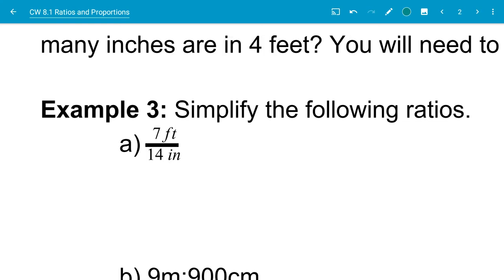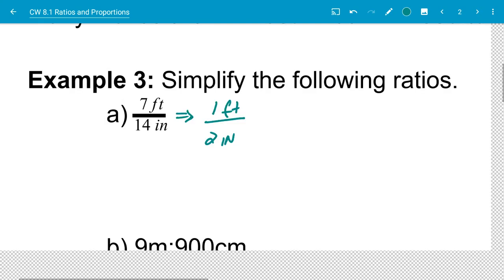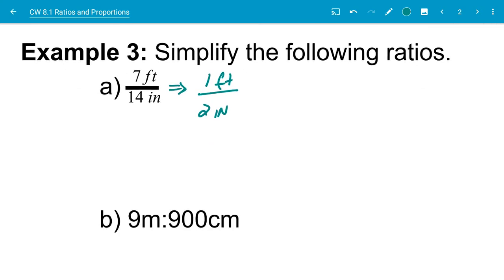The first thing that we want to do is let's go ahead and reduce this first, just the number portion. So seven and 14 can reduce to one half. So I have one foot over two inches. So now my problem is I have two different units, and I want to get rid of these units here. So here's the thing.